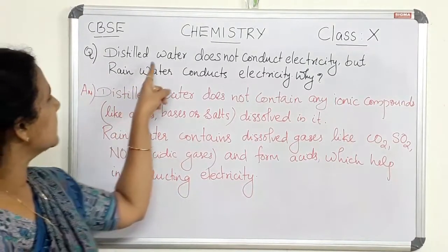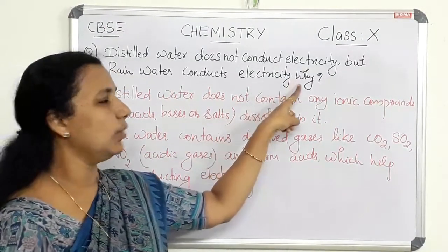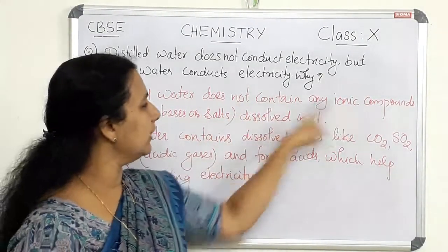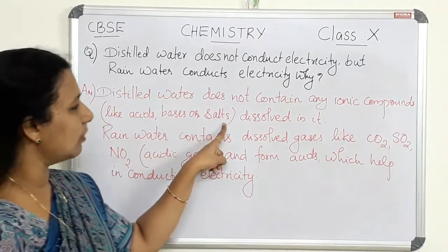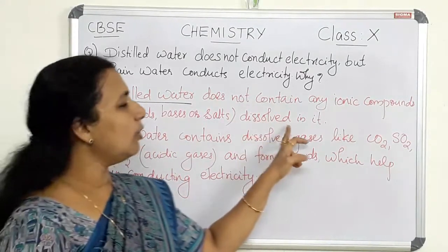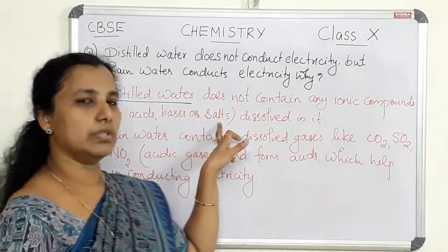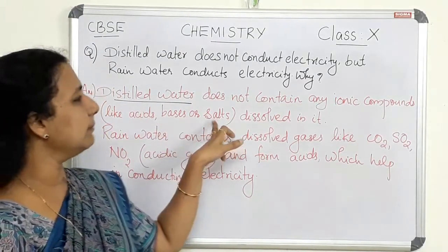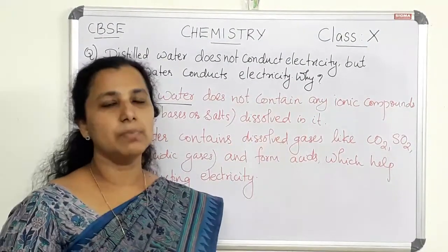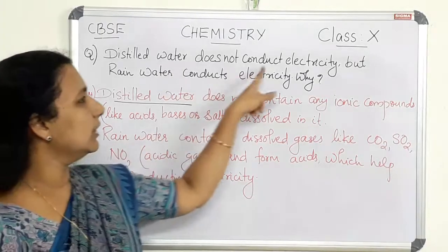Now let us see one question: distilled water does not conduct electricity but rain water conducts electricity — why? Distilled water does not contain any ionic compounds like acids, bases, or salts dissolved in it. No ionic compounds are dissolved in it, so there is no chance of production of ions — no charged particles are present. So that will not carry electricity. Therefore, distilled water will not conduct electricity.